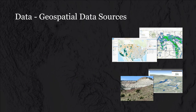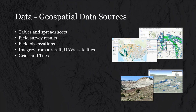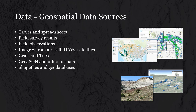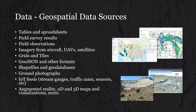Where is information coming from? Data used in a GIS can come from a wide range of places: tables or spreadsheets, data captured in the field, imagery, grids, GeoJSON or other web-based services, shapefiles, geodatabases, photographs. Even images captured on your iPhone typically store metadata with the XY location, so you could pull those right into a GIS. IoT feeds talk about real-time information — stream gauges, traffic cameras, sensors — as well as augmented reality, 2D, and 3D. There's a wide range of places information can come from to feed into a GIS.